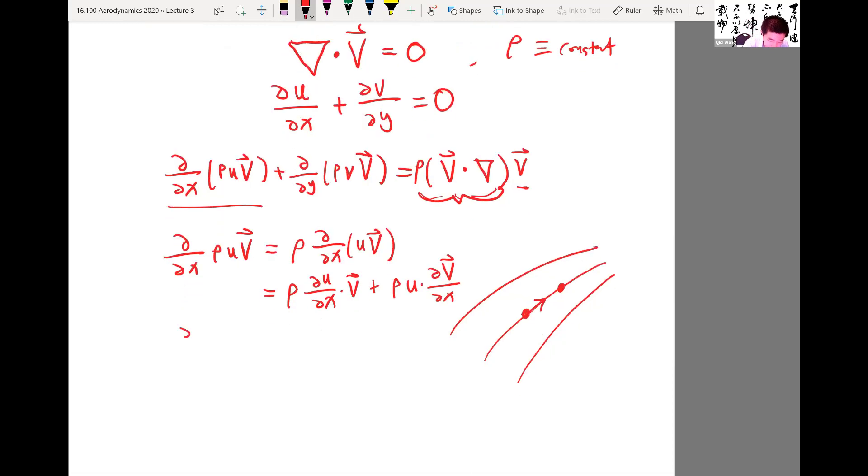Right? Similarly, we can expand ρv times vector V in the same way. What we get is derivative of V with respect to x times this big V plus ρv dot derivative of velocity vector. Oh, with respect to y, sorry. This is with respect to y.